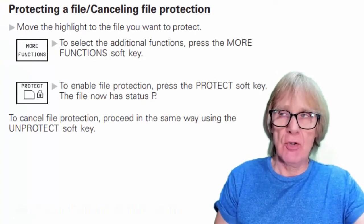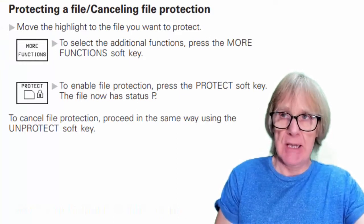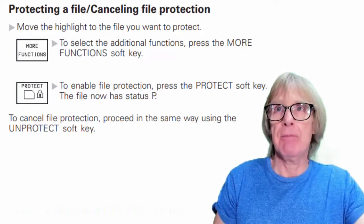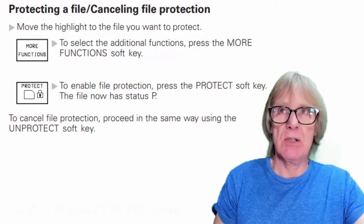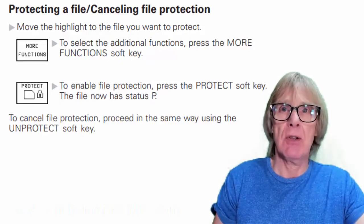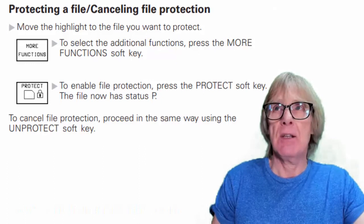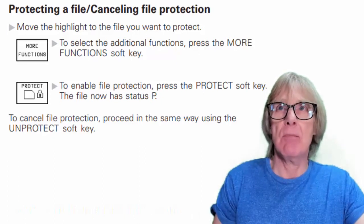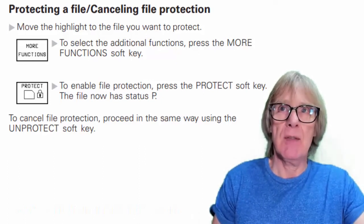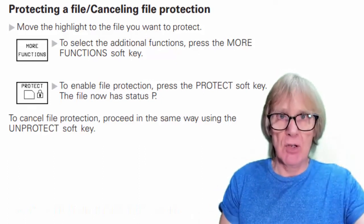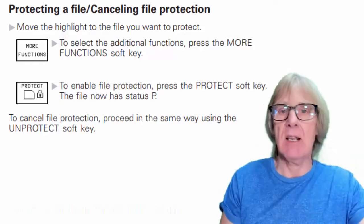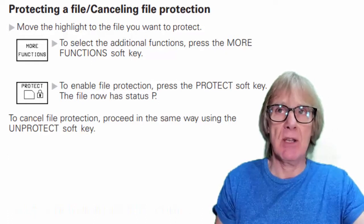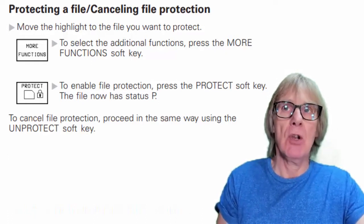On a Heidenhain control you can protect your programs. Go to your program management screen, cursor down to the program you need to protect, and then press the 'more functions' button. When you press 'protect' — the one with the lock on it — it will lock that program. It stops anybody deleting it, altering it, or tinkering with it generally.